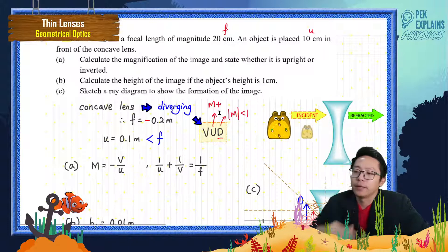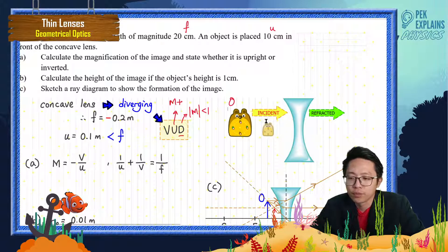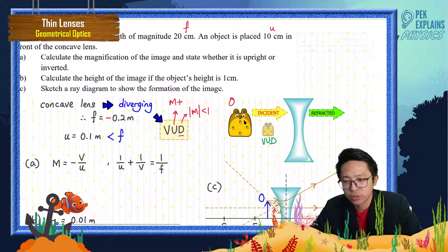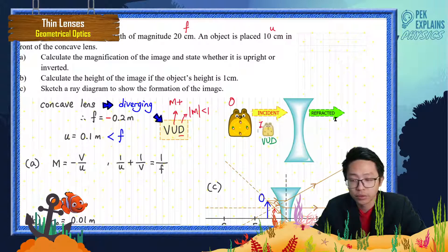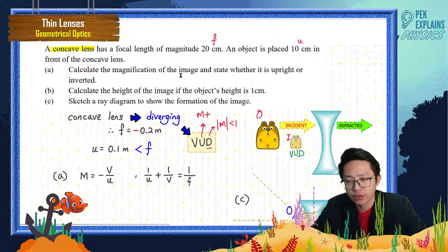We can visualize this: the object forms a virtual, upright, diminished image — a smaller version on the same side as the object. The image appears smaller than the object. This is a virtual image, meaning it is formed on the opposite side from the refracted ray. It is upright and diminished. Let's now calculate the magnification.